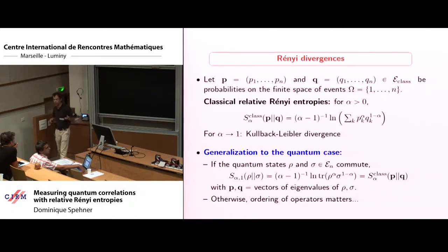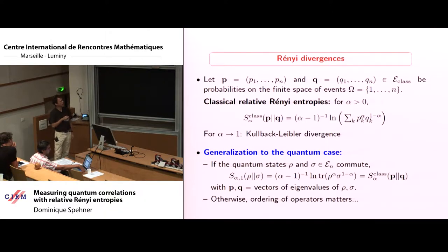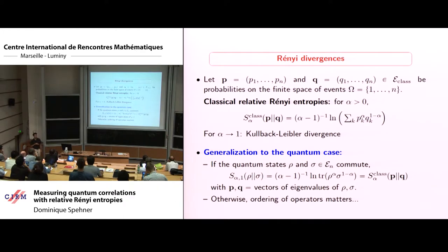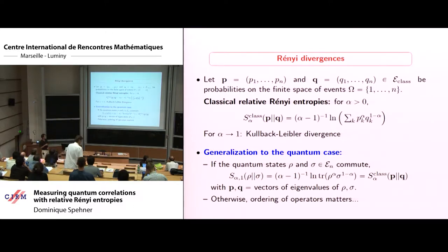You have probably heard about Rényi divergences. Sticking to finite-dimensional spaces, with a space of n possible events, the classical Rényi entropy or Rényi divergence is defined by this formula. When you take alpha going to one, you obtain the celebrated Kullback-Leibler divergence. The problem is: what is the generalization of this formula to the quantum case?